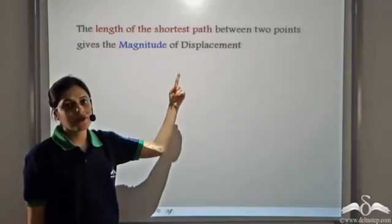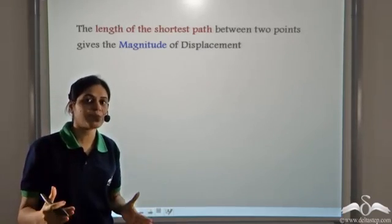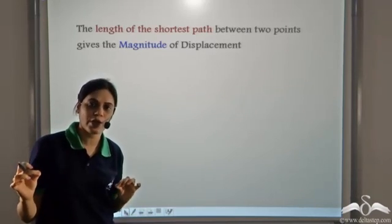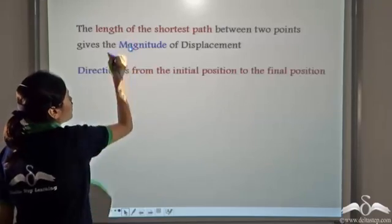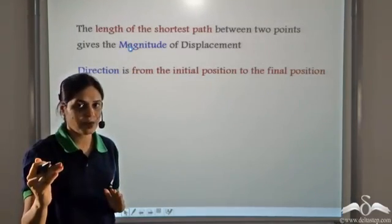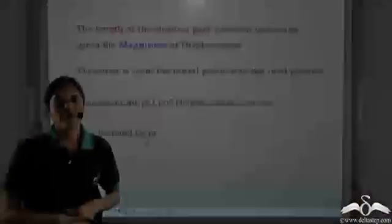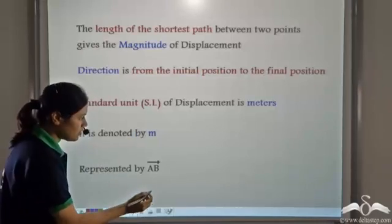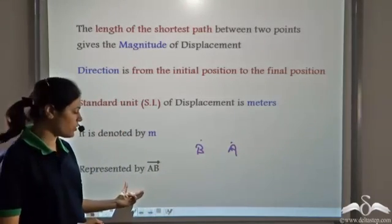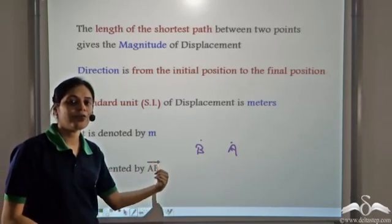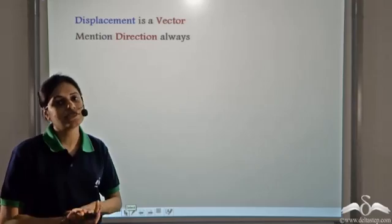The length of the shortest path between two points gives the magnitude of displacement. So whatever may be the path taken, the magnitude of displacement will be given by the length of the shortest path between the two points, which is the length of the straight line joining those two points. The direction is taken from the initial position to the final position. The standard unit for measuring displacement is meters, denoted by m. If A and B are two points, then we represent displacement between A and B as vector AB, where the arrow stands for the vector sign.